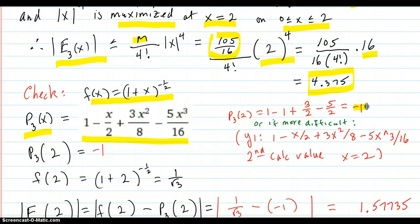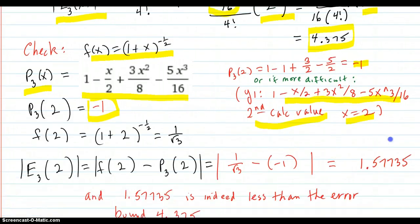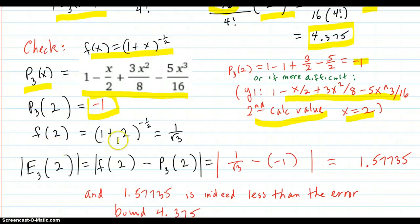And P3 at 2 evaluating there is x equals 2 is going to produce these numbers here by just plugging in and that equals negative 1. In a more complicated case you could do it this way. Put the function into y1 and do a second calc value and put the number in x equals 2. And sure enough you get the same thing. So f of 2 is of course the value that we are trying to approximate 1 over the square root of 3.